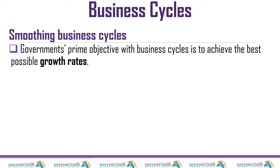Government's prime objective — what is it that government wants to achieve? We know that there are five main objectives. In South Africa, we use the acronym IFEPE: economic growth, full employment, exchange rate stability, price stability, and economic equity.